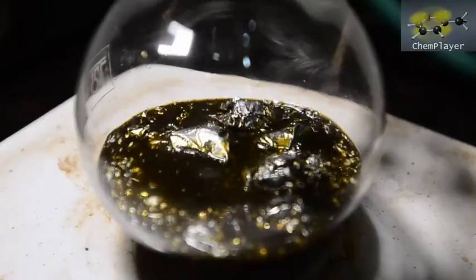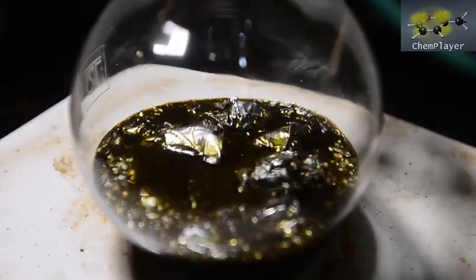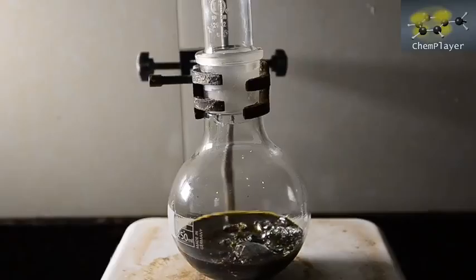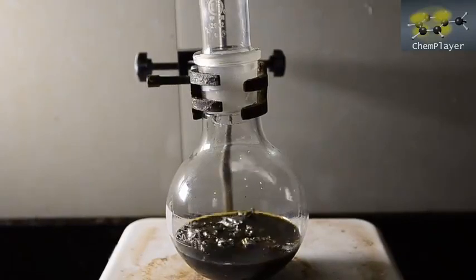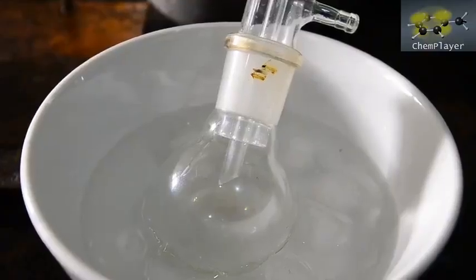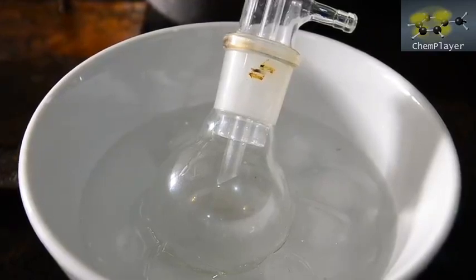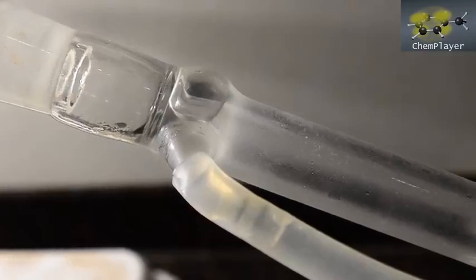At this point after an hour we decided to rearrange the apparatus and set up now for simple distillation. We'll heat the flask now on the hot plate and distill off both the excess methanol and also any other volatile products in here as well. Surprisingly the distillation of the flask contents did take quite a long time. The bulk of the solvent comes off fairly quickly and condenses as a colorless liquid. We're using the receiving flask cooled in ice water so as to minimize any escape of methyl iodide.